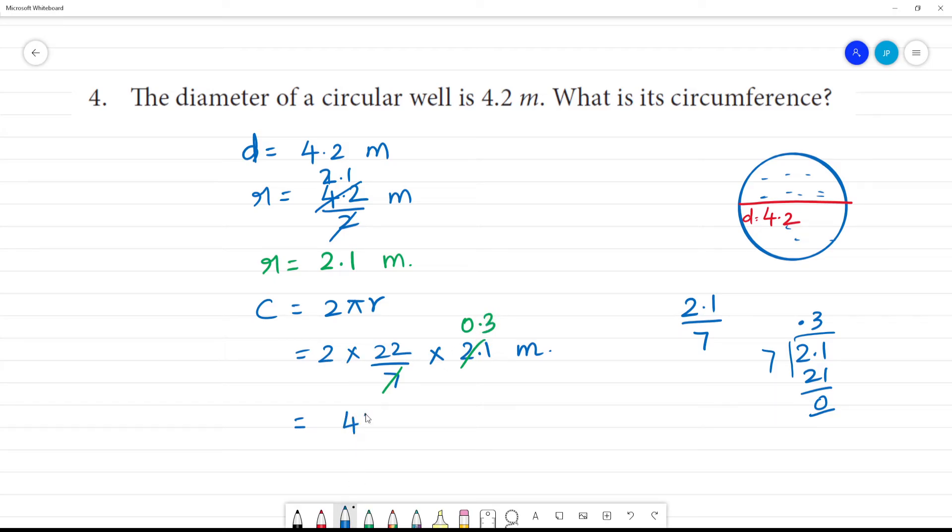44 multiplied by 0.3. Let's see what we get. 44 multiplied by 0.3. 4 threes are 12, reminder 1. 4 threes are 12 plus 1 is 13.